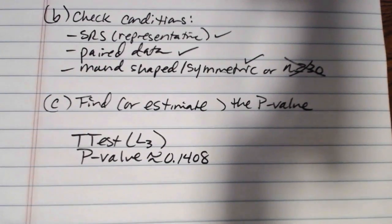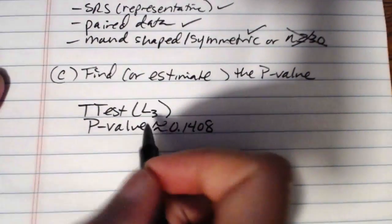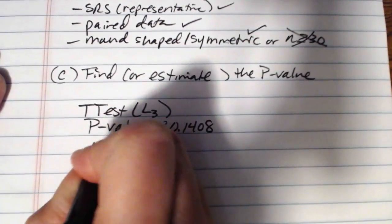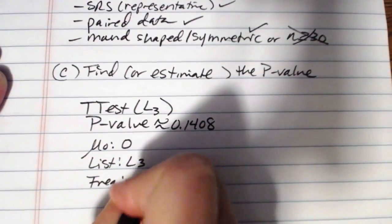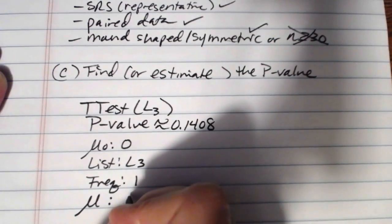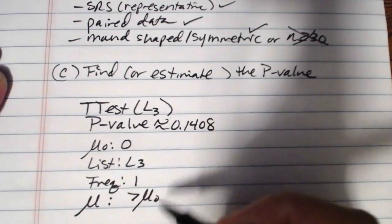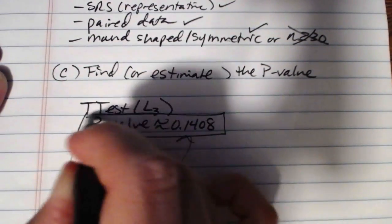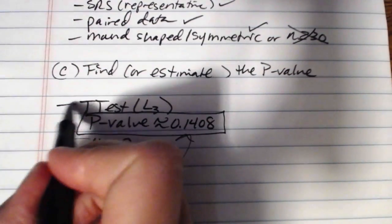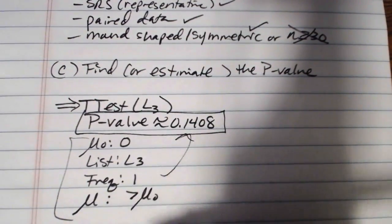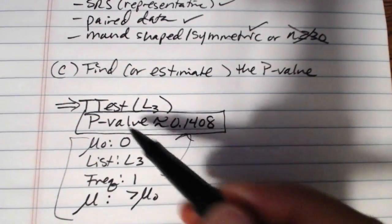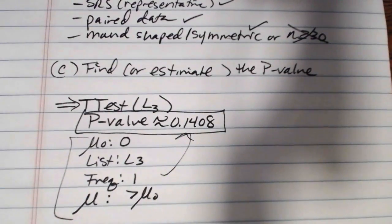And if you're worried about showing work on a test or an assignment or something like that, usually when you do your t-test on L3, you can indicate that you set your mu sub-zero to zero. You had your list at L3, frequency was one, and then you had mu greater than mu sub-zero. And then you can say, this is what I put in, and then there's what I got out. And that's a really great way to notate your work, because now I can tell what you did. You ran a t-test on L3, here's everything you put in, here's what you got out. But that way I can see everything that you've done in the calculator, and I know where to go looking for issues if you're not getting the proper value there. But basically a 14% p-value.